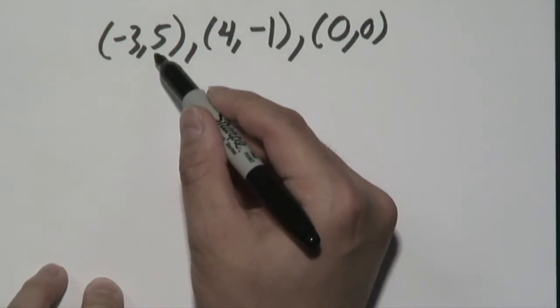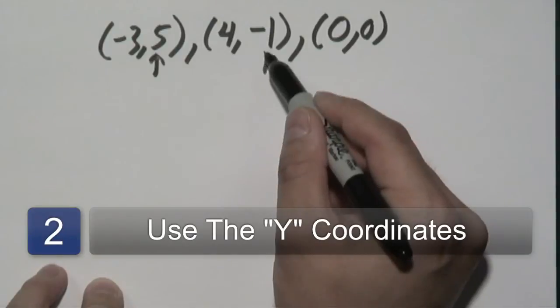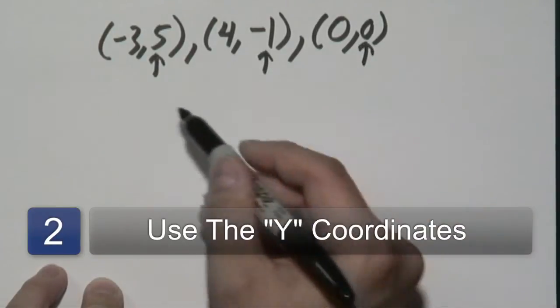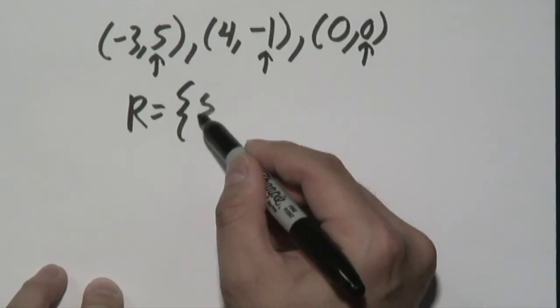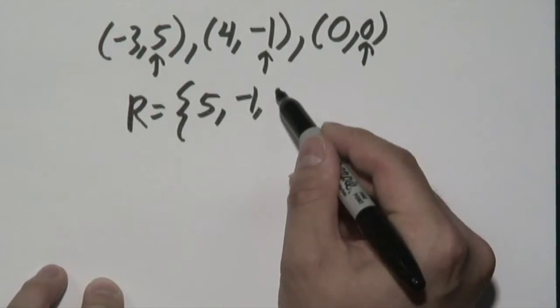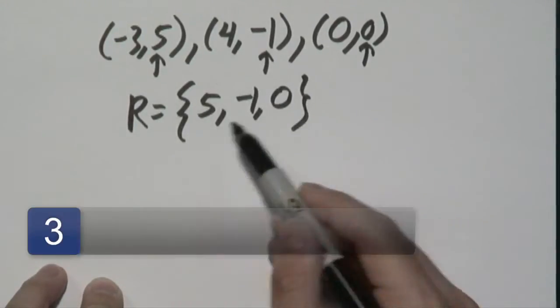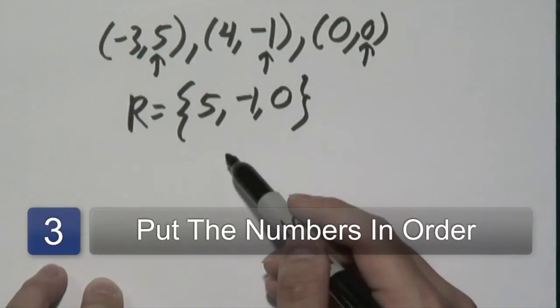So in this case, the y coordinates are 5, -1, and 0 respectively. So your range in this case consists of these three numbers: 5, -1, and 0. Typically, you want to put them in order, but in this case, it would just be an illustration.